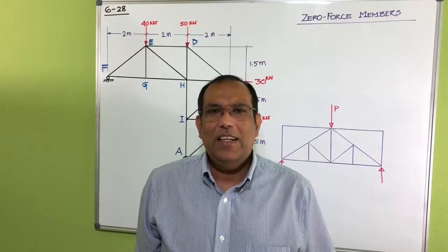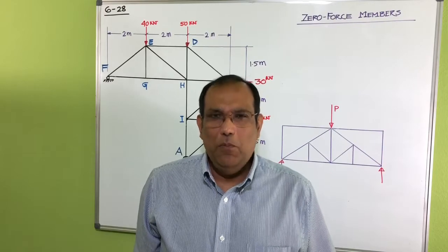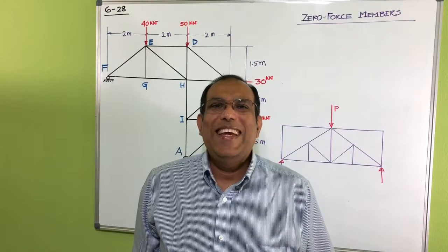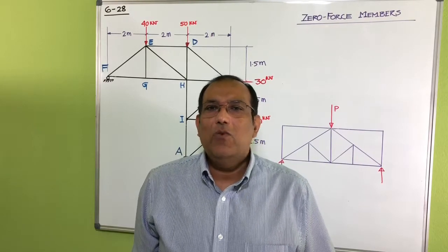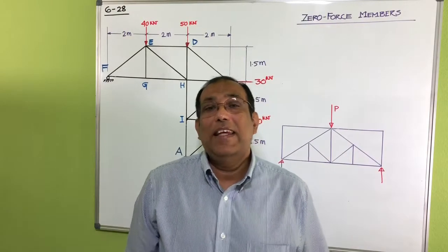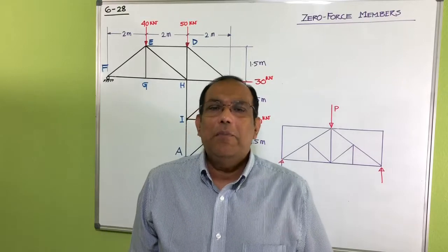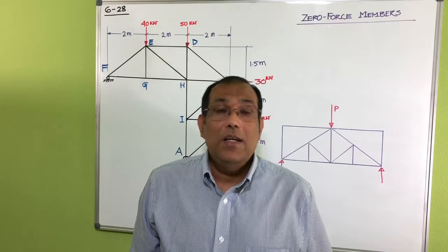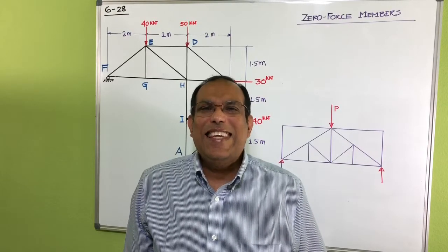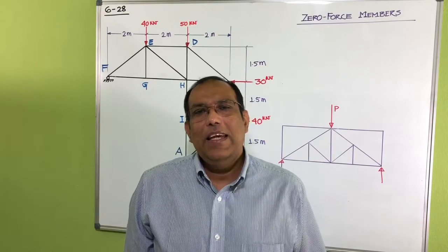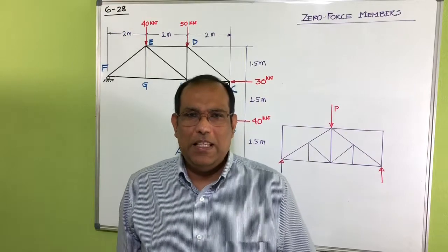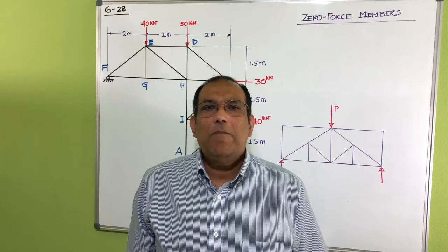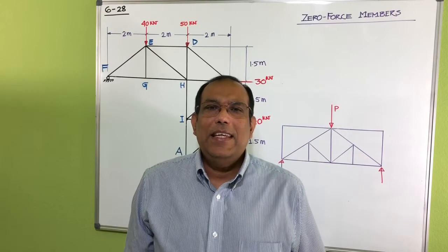The section method is a little easier if you are okay with taking moments. The advantage is that if you want to find the force in any member in the middle of the truss, you don't have to start from the corner and go step by step. You can just cut a section along that member. Also, with the joint method, a single mistake carries over everywhere, which doesn't happen with the section method.